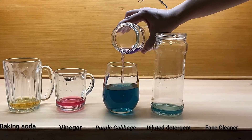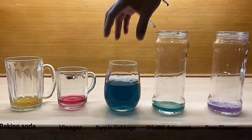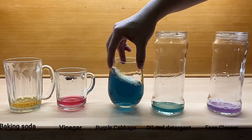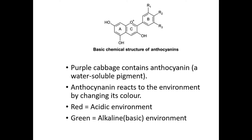It was because the purple cabbage contained a water-soluble pigment known as anthocyanin. Anthocyanin reacts to the environment by changing its colour. In simple terms: red indicates an acidic environment, and green indicates an alkaline or basic environment.